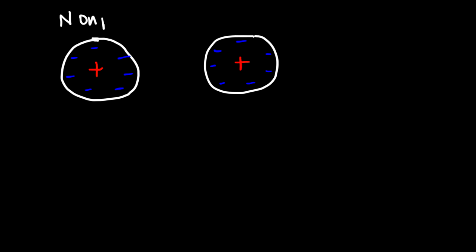Let me describe what they are with a visual illustration. So let's say we have two atoms with a positive charge at the center. We know that in the electron cloud, the atoms are surrounded by a negative charge. The nucleus at the center has a positive charge, and depending on the number of protons, it could be a positive 8 charge or a positive 12 charge. When the electrons are evenly distributed in an atom, you're going to have a non-polar atom.